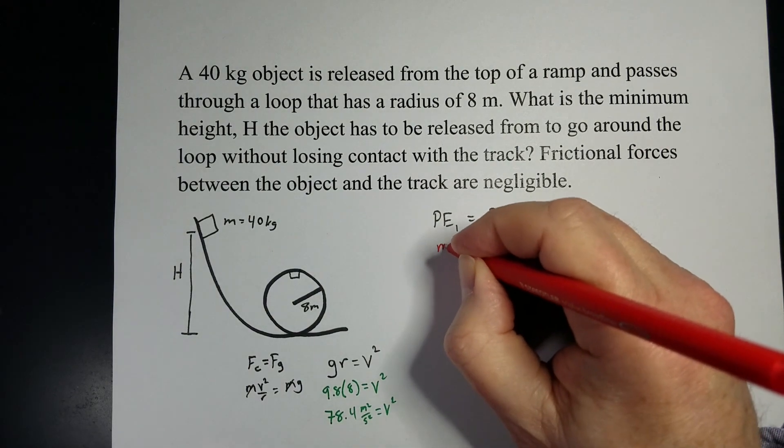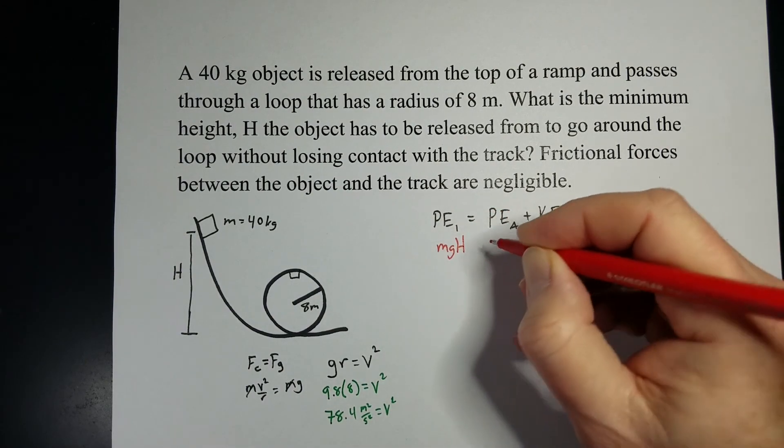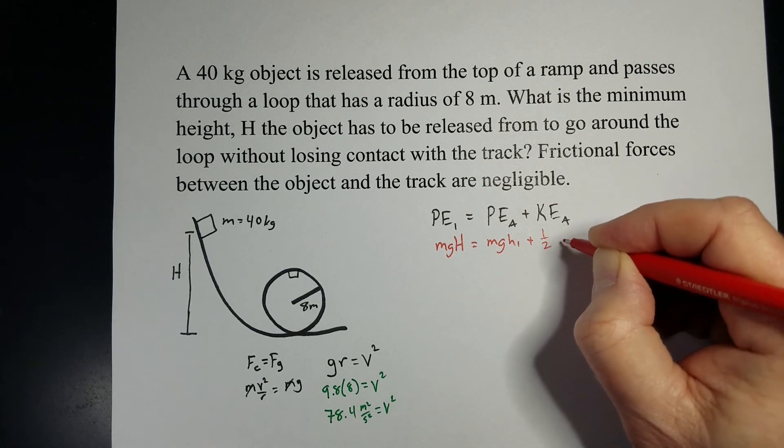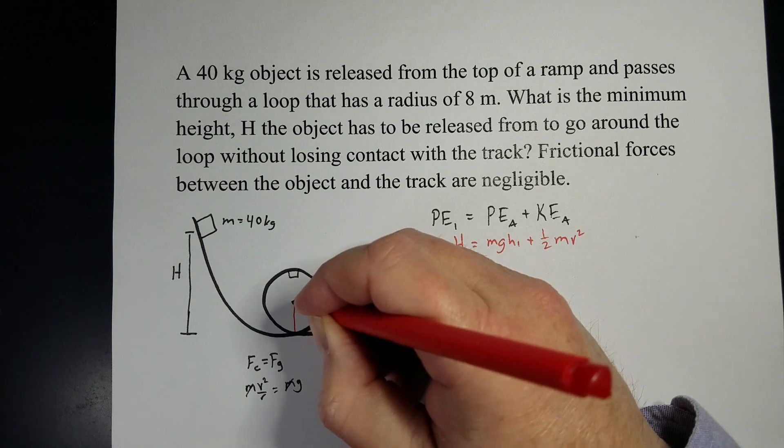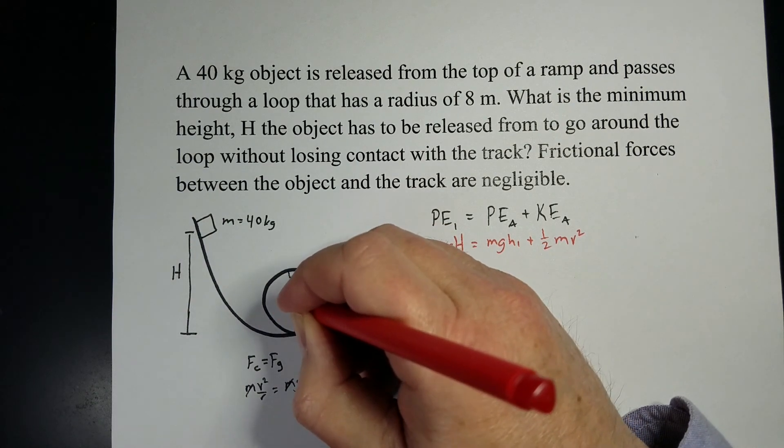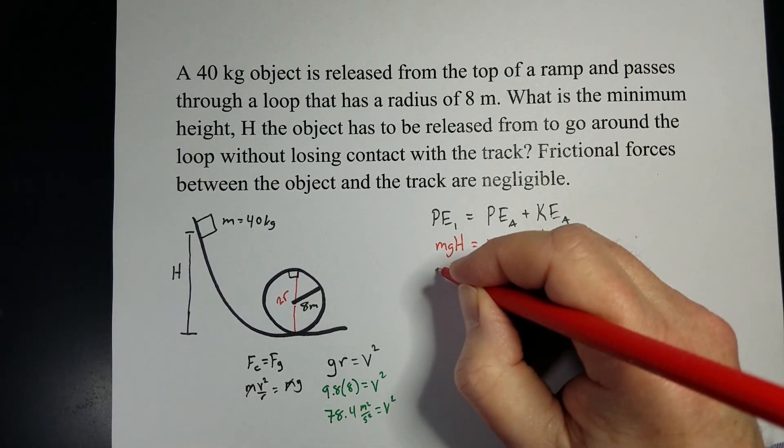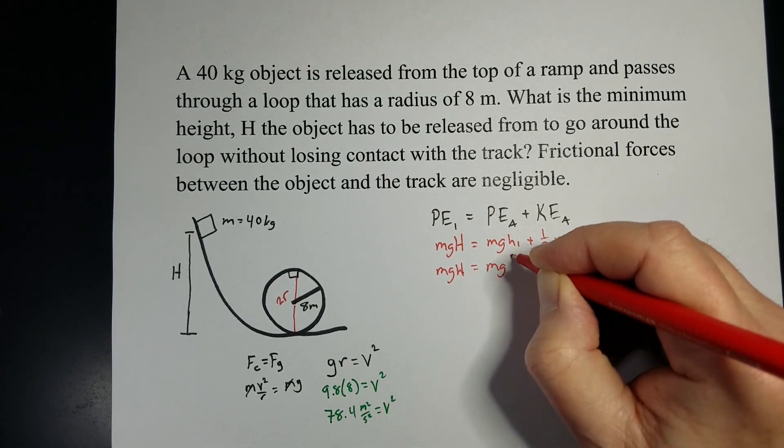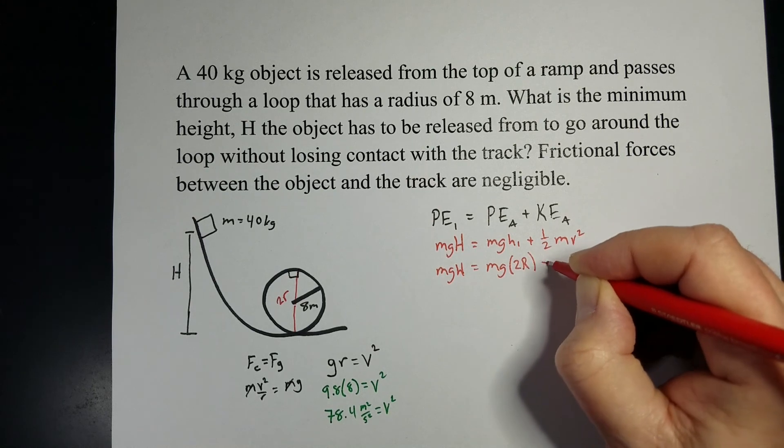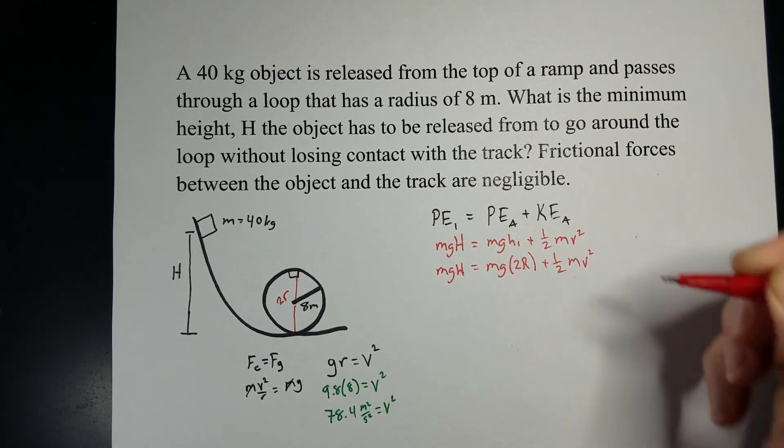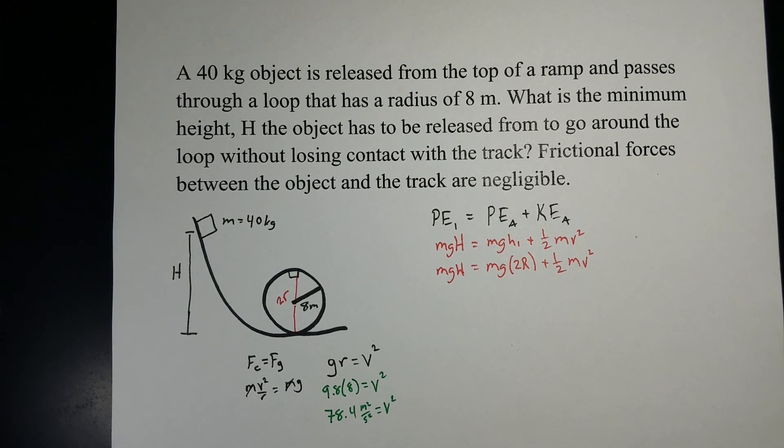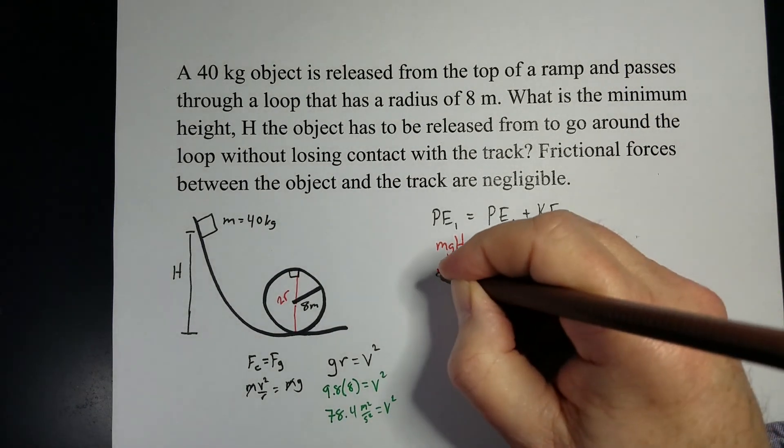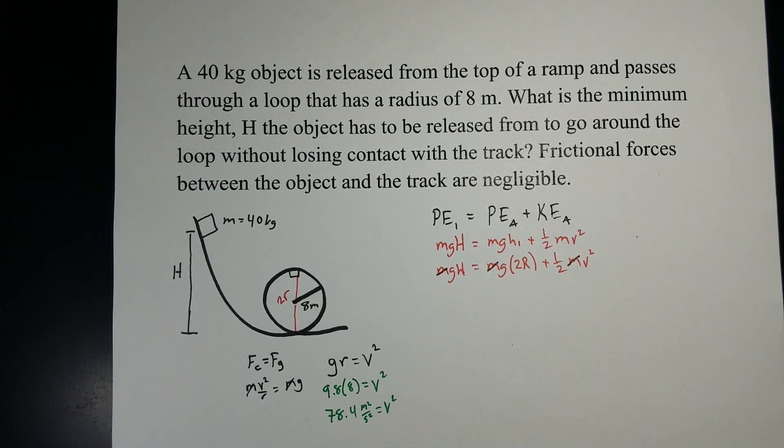So back to the energy. Mgh, which that's going to be a capital H, equals mg h1 plus 1 half mv squared. And let's say this is on the ground, so that height is twice the radius, so it's the diameter of the circle. So I'm going to go ahead and put that in. Mgh equals mg2r plus 1 half mv squared. Now, I am going to go ahead and do a little simplification. Because I've got mass in each term. I'm going to go ahead and get rid of that. But that's the only simplification I'm going to do. I'm going to go ahead and work it out long.